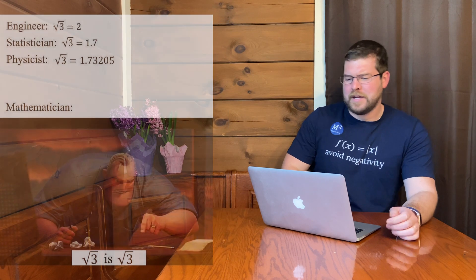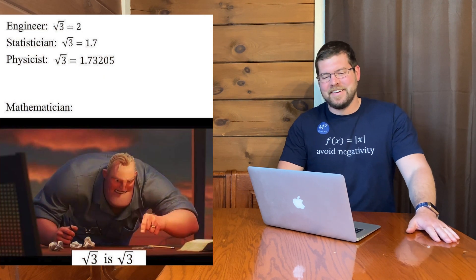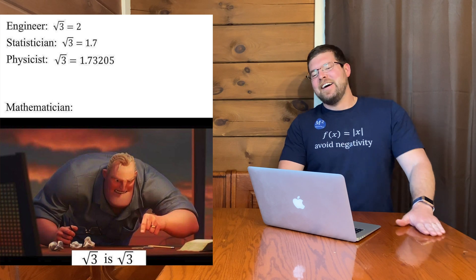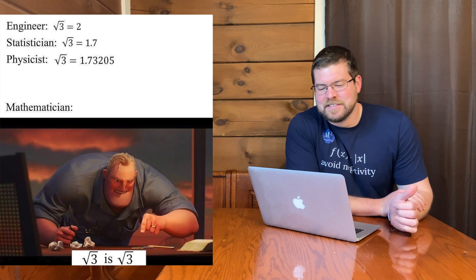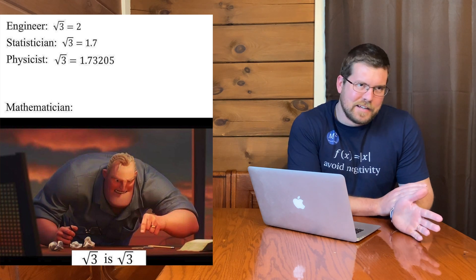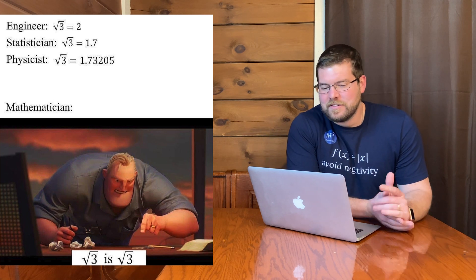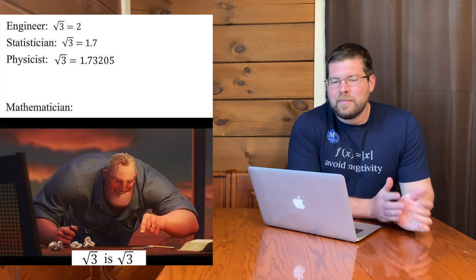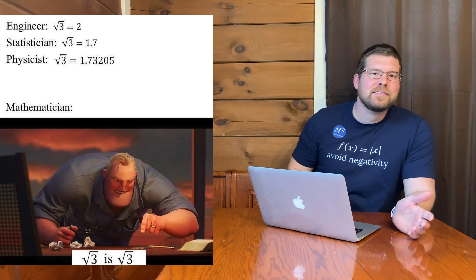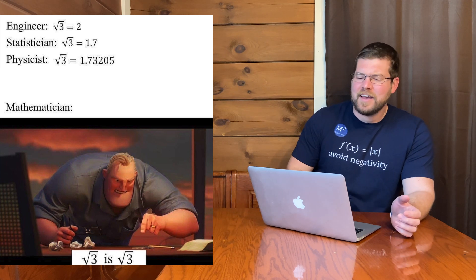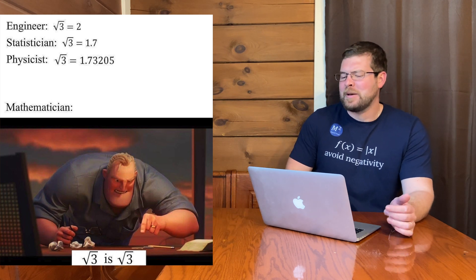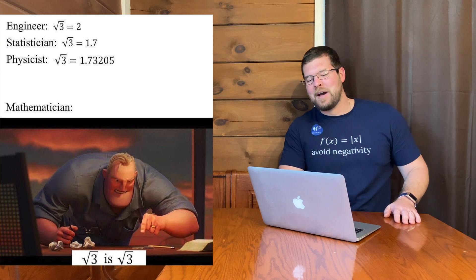All right, number four here. It's a jab, it's a basic jab at engineers and other people, statisticians, you know, how far they go, physicists. But like, I think the main one here is mathematicians. We don't like approximations. We just want square root of 3, square root of 3, that's it, we're done. And it is a very true meme right there, so good for that one there.